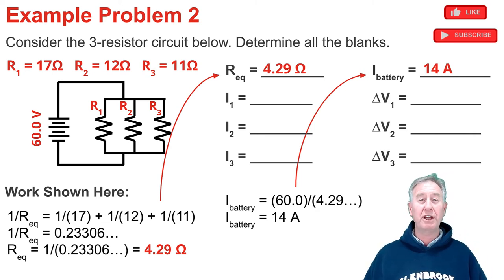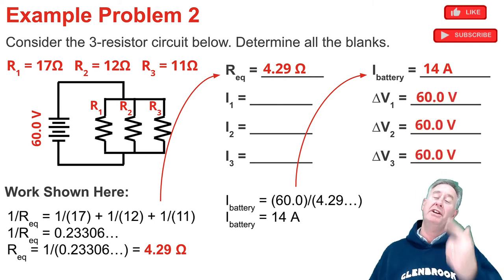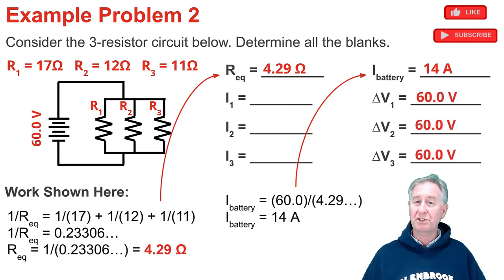Now for the easy ones right above me. Delta V₁, delta V₂, delta V₃. The charge gains 60 volts as it passes through the battery. It must lose 60 volts when it goes through the external circuit. It only goes through one of the branches, and so every charge will lose 60 volts in whatever branch it goes through. Delta V₁, delta V₂, and delta V₃ are all 60 volts.